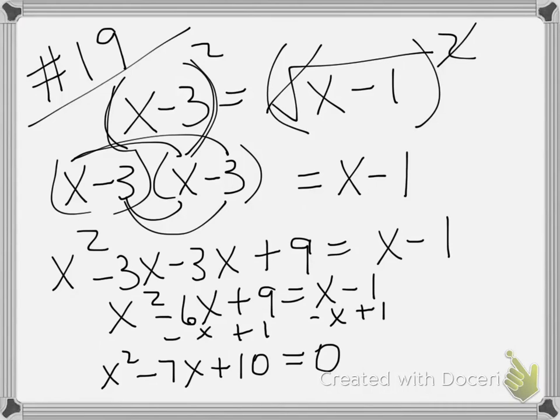If I factor this, it factors into x minus 5 times x minus 2, because 5 times 2 is 10, and 5 plus 2, since they're both negative, is negative 7. Remember that your solutions are always opposite of what your factors are. So my solutions are 5 and 2.